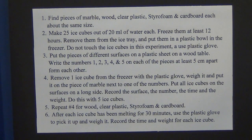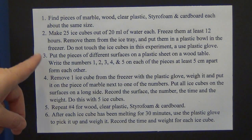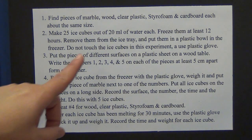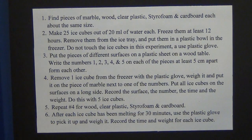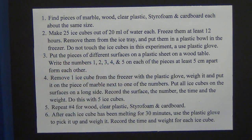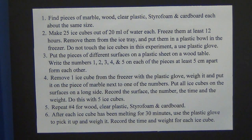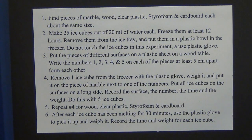Do not touch the ice cubes in this experiment — use a plastic glove. Three, put the pieces of different surfaces on a plastic sheet on a wood table. Write the numbers 1, 2, 3, 4, 5 on each of the pieces at least 5 centimeters apart from each other — those are the numbers where she placed the ice cubes. Four, remove one ice cube from the freezer with a plastic glove, weigh it, and put it on a piece of marble next to one of the numbers. Put all the ice cubes on the surfaces on a long side. Record the surface, the number, the time, and the weight. Do this with five ice cubes.